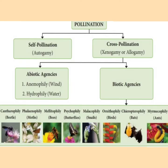To sum up, pollination is of two types: self-pollination (autogamy) and cross-pollination (xenogamy or allogamy). Cross-pollination by abiotic agencies includes anemophily by wind and hydrophily by water. Biotic agents include cantharophily by beetles, phalaenophily by moths, melittophily by bees, psychophily by butterflies, malacophily by snails, ornithophily by birds, chiropterophily by bats, and myrmecophily by ants.